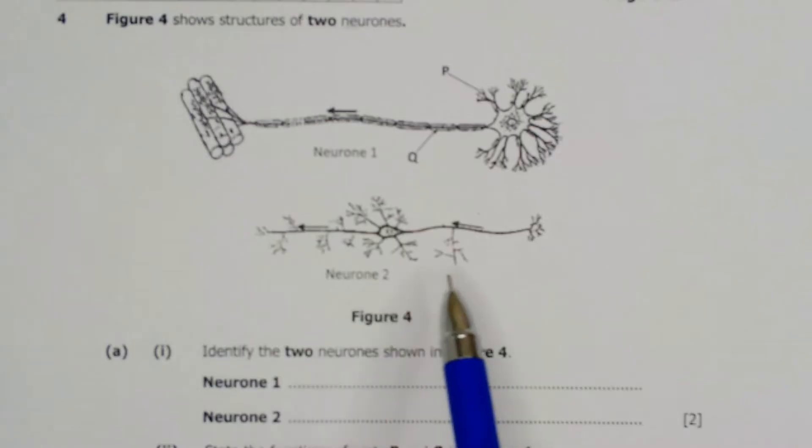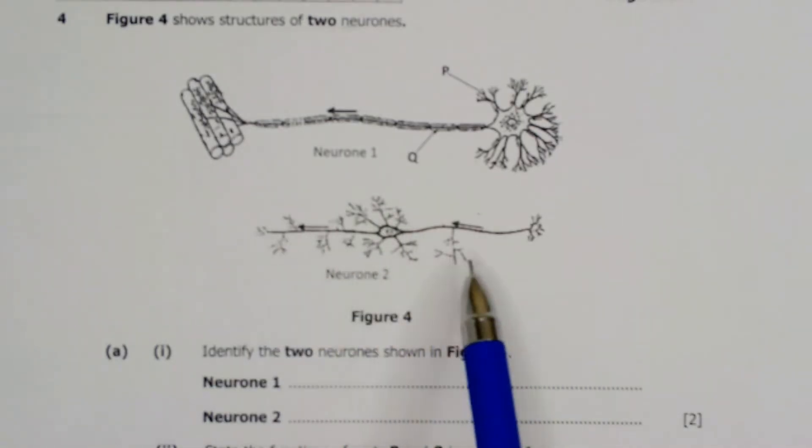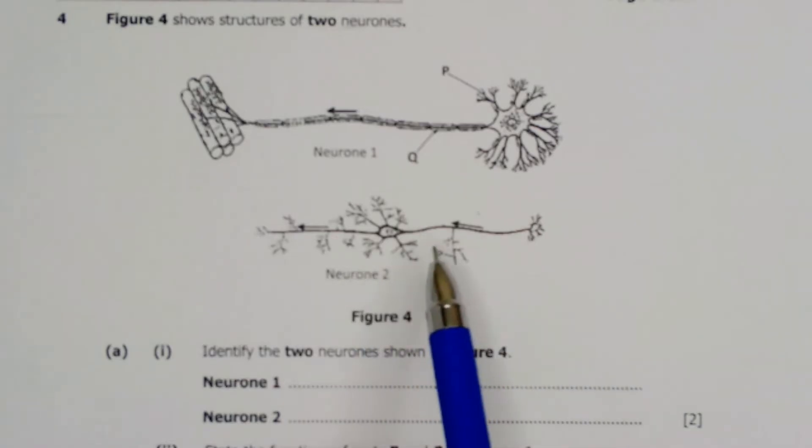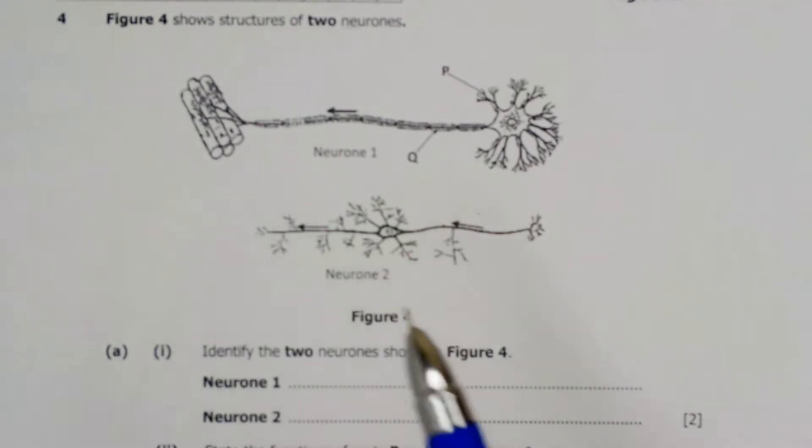Then neuron two, this has got many links or it's multipolar. It means that this one is a multipolar neuron or the relay neuron. So we can write the answers down for one and two.